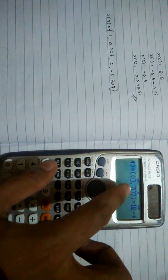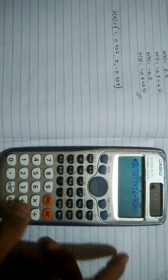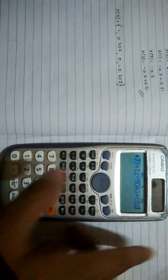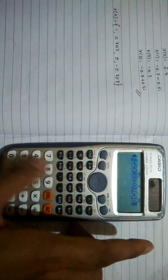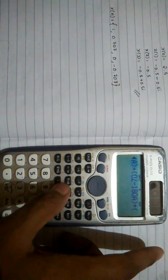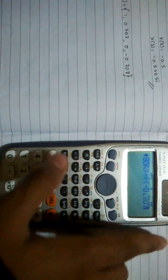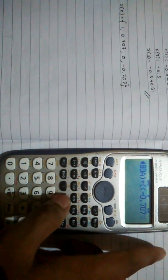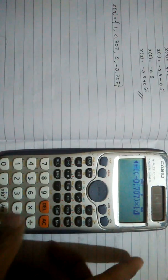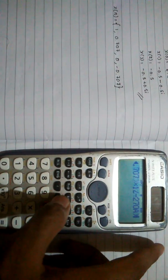After that, plus open bracket 0 shift angle minus 180 alpha a, and then close bracket. And then plus open bracket, and then open another bracket, and then minus 0.707, and then close bracket into 1 shift angle minus 270 alpha a, and then close bracket.